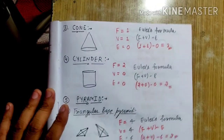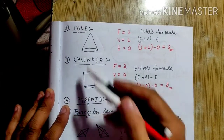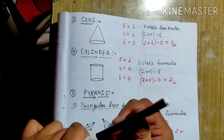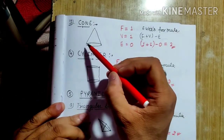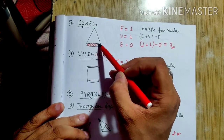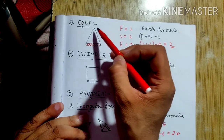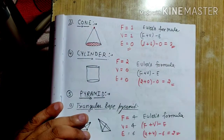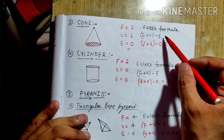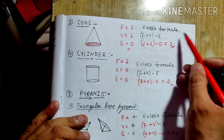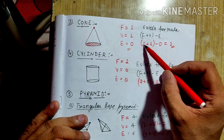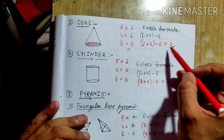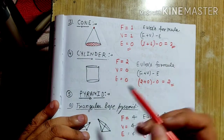The next figure is the cone. As we can see, there is only one surface and one vertex but there is no edge. Applying Euler's formula: face is 1, vertex is 1, minus 0 edges. The answer is 2 — hence verified.